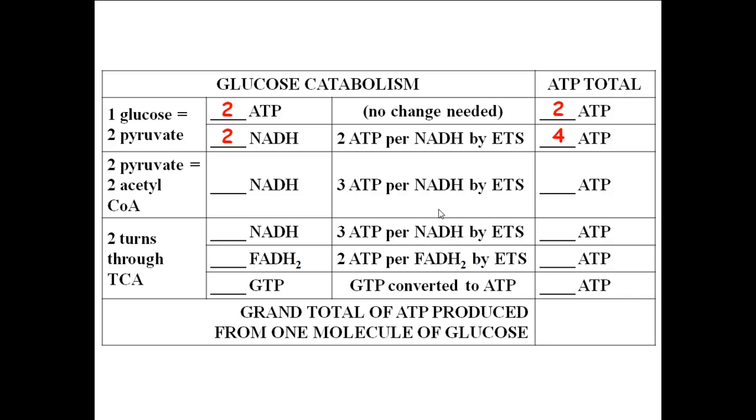All right. Now, from two pyruvates to two acetyl-CoAs, how many NADHs do I get? Two. Now, that happens where? In the mitochondria. So, everything else is going on inside the mitochondria. You don't have to worry about it. So, for these NADHs, I get three ATP per NADH. That gives me how many ATP? Six.